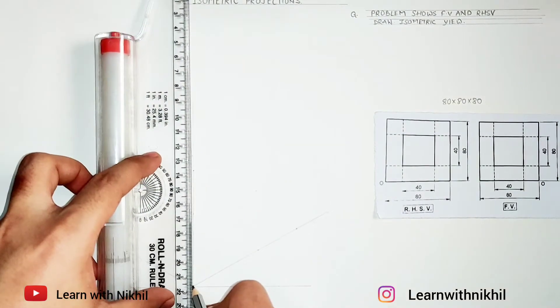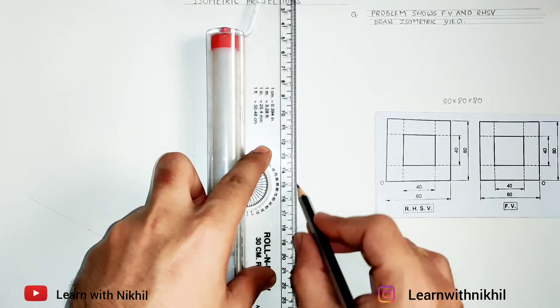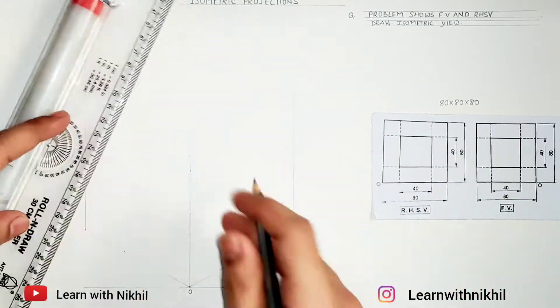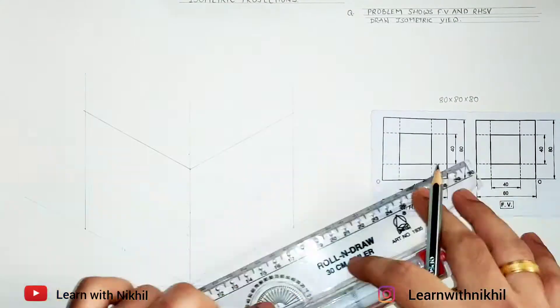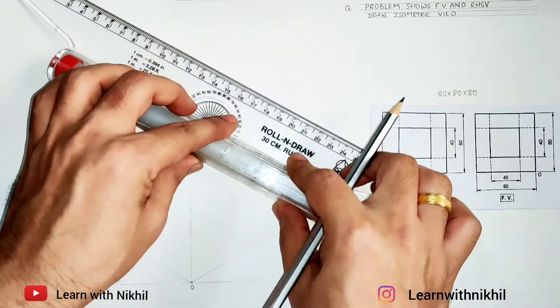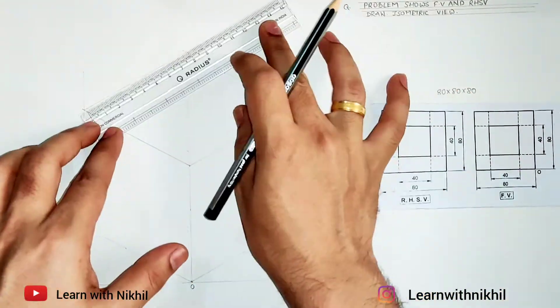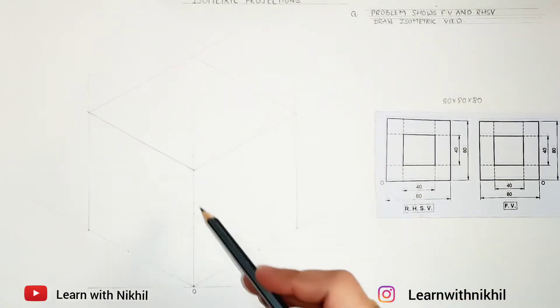Now from these points I'll construct a cube. Draw parallel lines properly from these points, taking this as a reference, joining these lines—construct a cube. After constructing the cube, just check whether the dimensions are proper so later on there will be no difficulty.